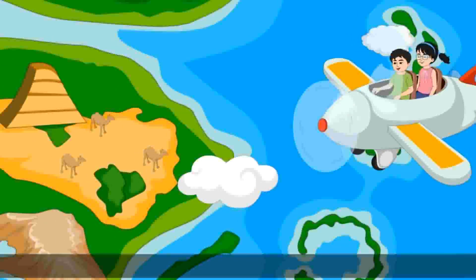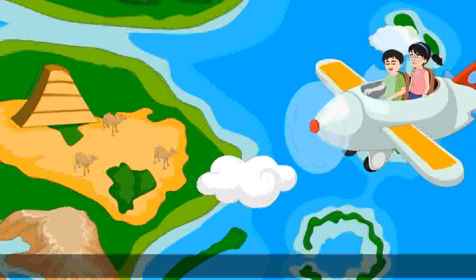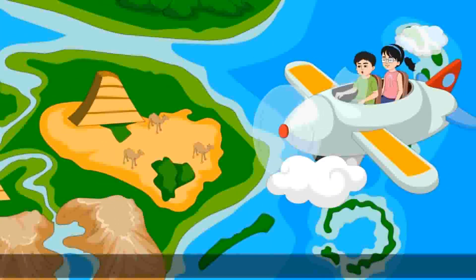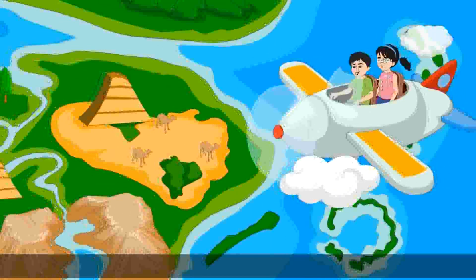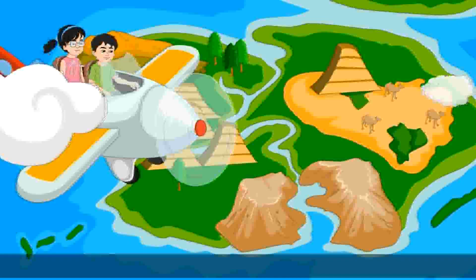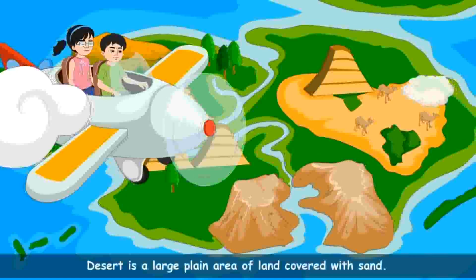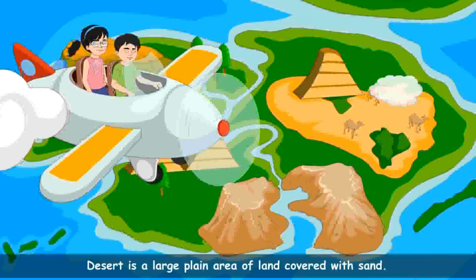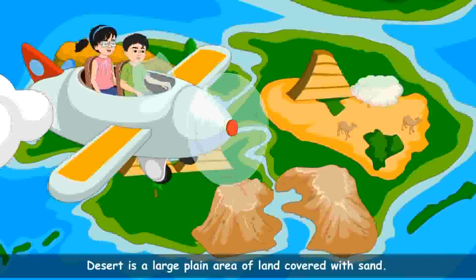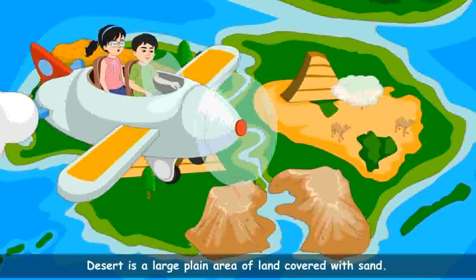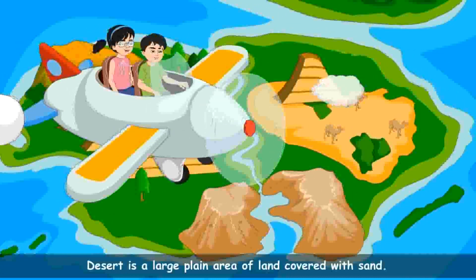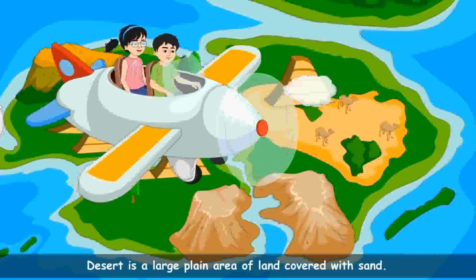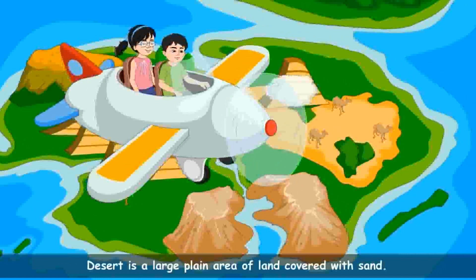Which is the area appearing so dry? Because I can see very few plants in the area. I can also see camels walking in this area. This is a desert. It has a large plain area of land covered with sand. The climate remains hot and dry during summers and is very cold in winters. People generally do not like to live in desert due to the harsh climatic conditions.